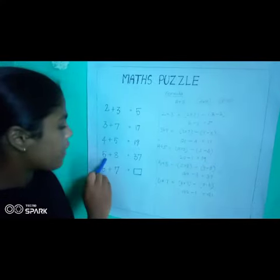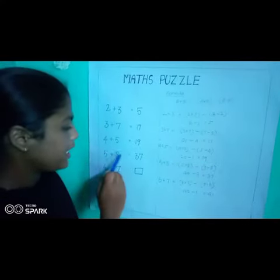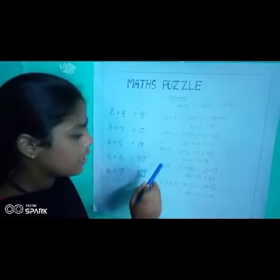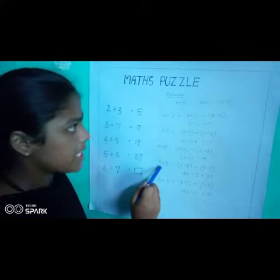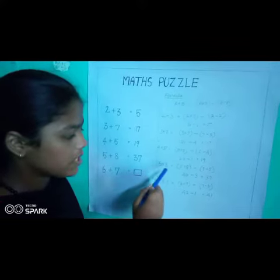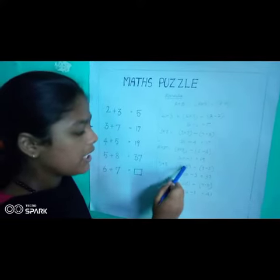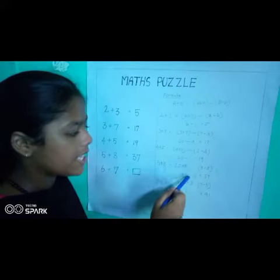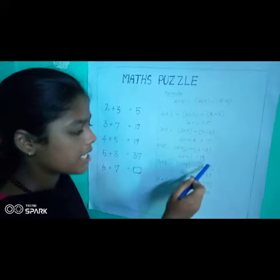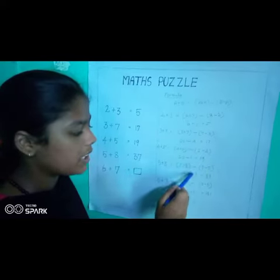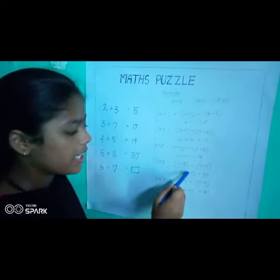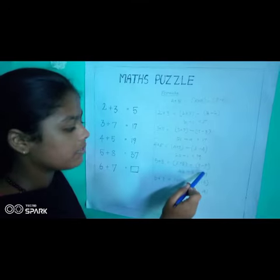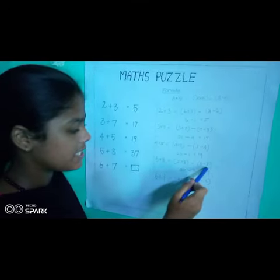So the answer is 19. 5 plus 8 equal to 35. A value is 5 and B value is 8. 5 into 8 equal to 40, minus 8, minus 5, equal to 3. 40 minus 3 equal to 37.